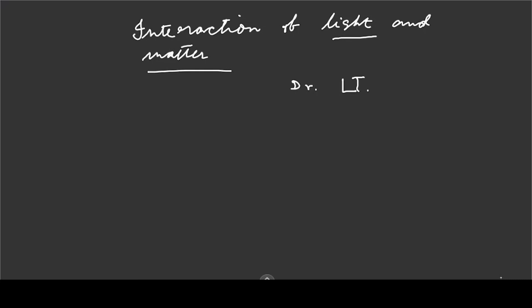This is the interaction of light and matter. Light means electromagnetic radiation. Electromagnetic radiation means light. The incident light is present.